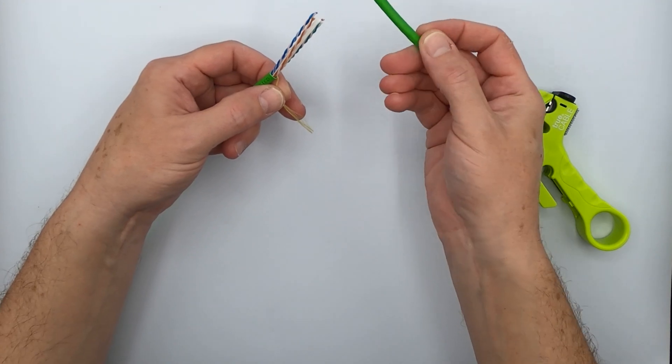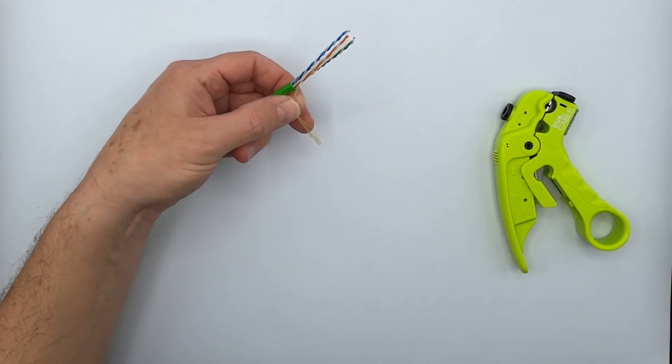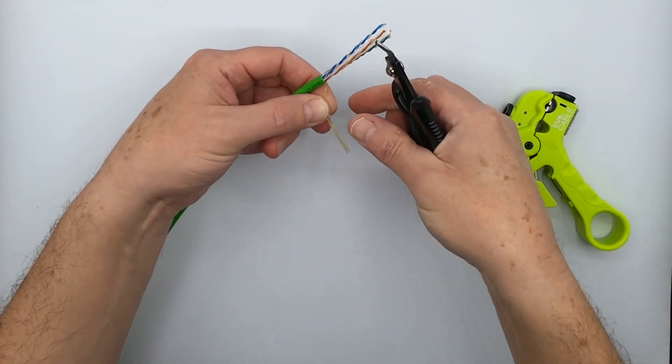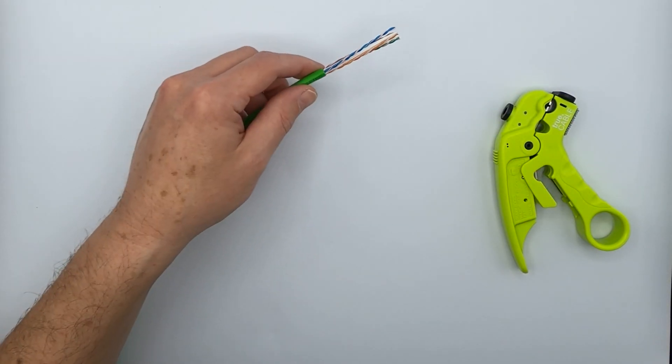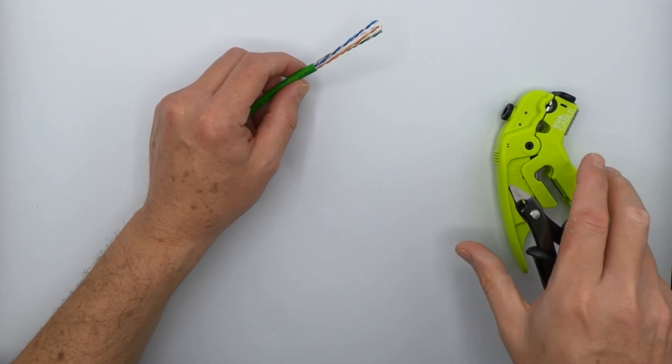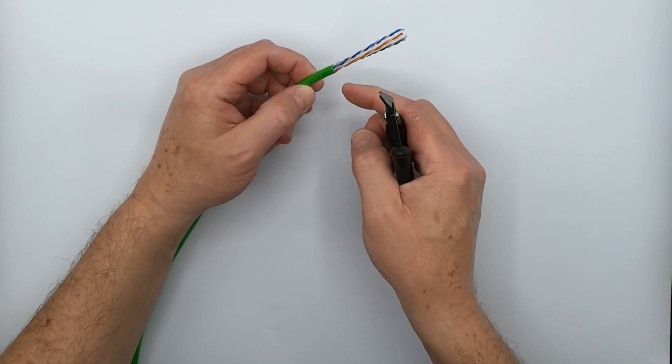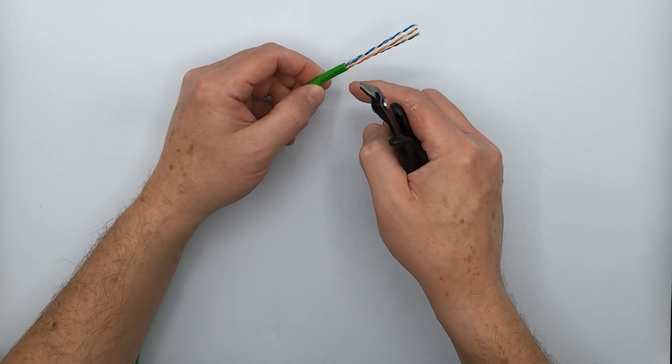Keep this little guy around for untwisting the pairs and you'll see why that's useful. Next up is to cut off the little rip cord there. Some people use the rip cord for stripping the cable jacket back. I prefer using an actual stripper because you get a cleaner edge.